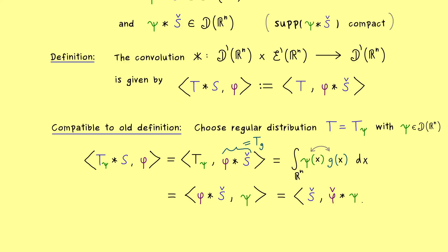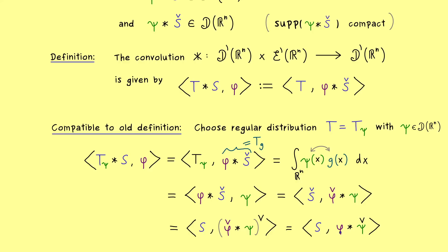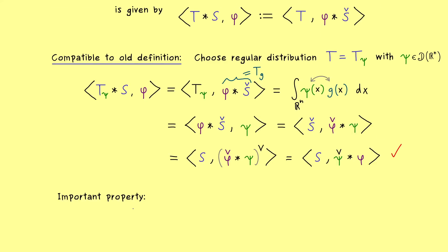This is exactly how the old definition worked. The only thing left is to push the check from the left hand side to the right hand side using the definition of the reflection operator for distributions. Then we calculate for ordinary functions how the reflection operator acts in the convolution — the check cancels with phi and goes to psi. Moreover, since the convolution is commutative for test functions, we can exchange the order, giving us psi-check star phi. This is exactly our old definition, so it does not matter which of the two definitions we choose — the extension is consistent.